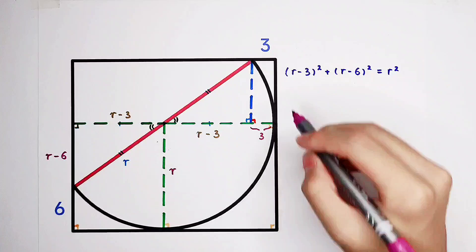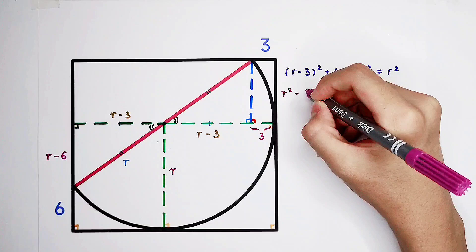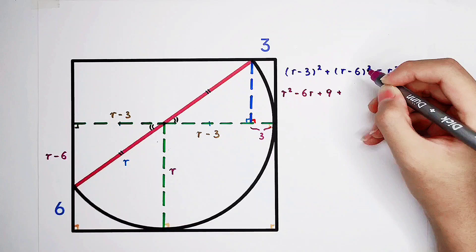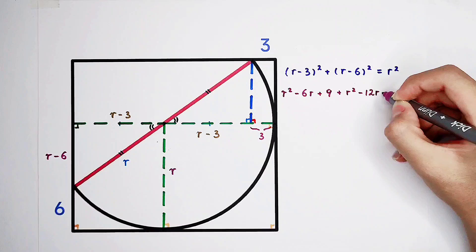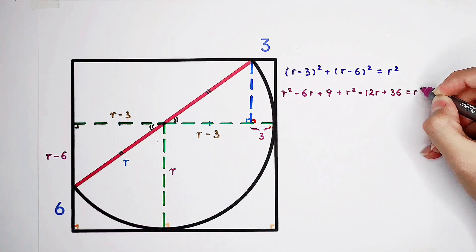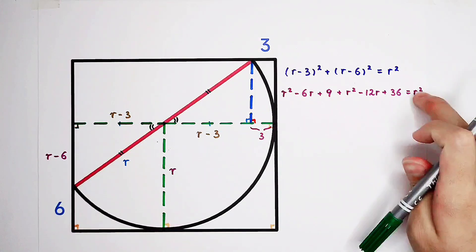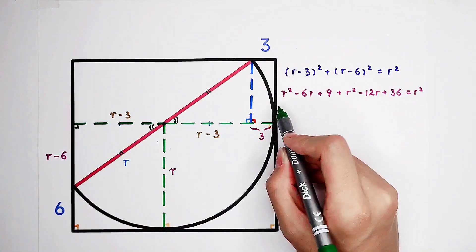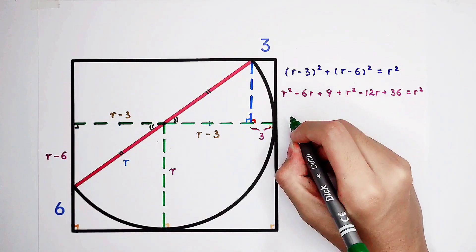Binomial expression, r minus 3, or squared, is r squared, minus 6r, plus 9. R minus 6, or squared, is r squared, minus 12r, plus 36. And the right-hand side is r squared. Very good. Then, if we subtract the left-hand side, r squared, from both sides, then we can get r squared, plus r squared, minus r squared, is r squared.